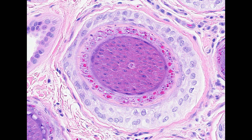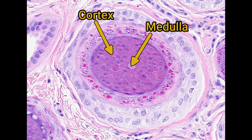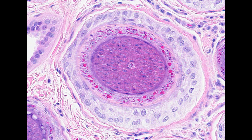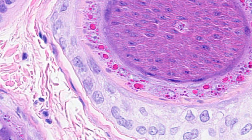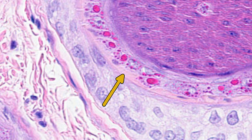Moving further up the hair follicle, the cells are differentiating even more. The medulla of the hair shaft is now a tiny portion with the cortex forming the bulk. The cells of the cortex are producing keratins, turning their cytoplasm more eosinophilic. The cells of the cuticle have flattened and are forming a more convincing barrier. Meanwhile the inner root sheath looks similar, but a hyaline eosinophilic layer appears at the margin between the inner and outer root sheath. The inner root sheath is formed of two cell layers: Henley's layer and Huxley's layer.